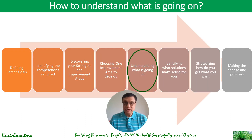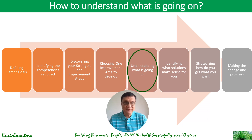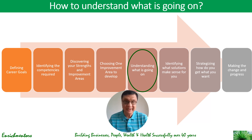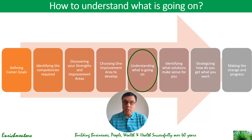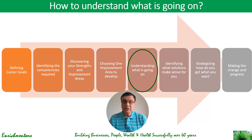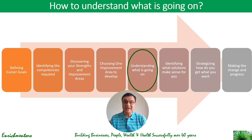So how do you understand what's going on in your life? We have come almost halfway. You've defined your career goals, you've identified the competencies required, you've discovered your strengths and improvement areas, and you've chosen one area to develop. So you know what to develop — what part of personality, what aspect, what trait — and now you need to figure out the best way of doing that. The first step is to understand what is going on in your life in relation to that improvement area.